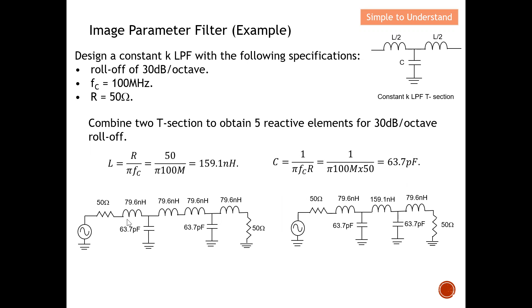For the implementation, I need two T-sections. Counting all reactive elements across the two T-sections gives six elements total, but the two adjacent inductors in the middle are combined into one. This results in exactly five reactive elements, achieving the required 30 dB per octave roll-off.